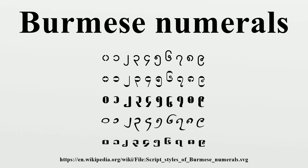Round number rule: when a number is used as an adjective, the standard word order is number plus measure word. However, for round numbers, the word order is flipped to measure word plus number. The exception to this rule is the number 10, which follows the standard word order.